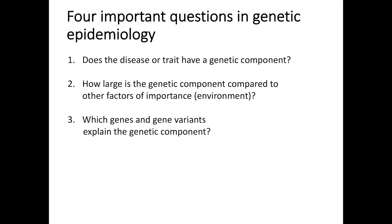I'm a genetic epidemiologist, and there are four important questions in genetic epidemiology that we try to answer. Does a disease like diabetes, or a trait like LDL cholesterol, have a genetic component? If yes, how large is the genetic component compared to other factors like environmental factors? Which genes and genetic variants explain this component? And the fourth — perhaps the most exciting — what are the mechanisms behind these genetic factors that associate with different diseases?